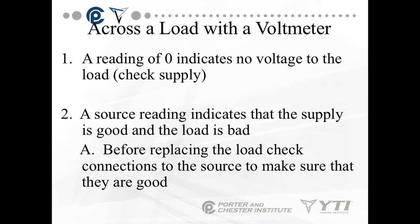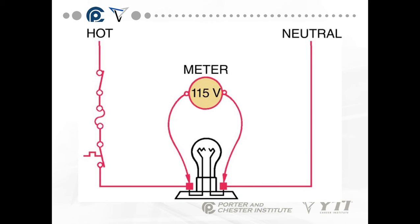Before replacing anything, always make sure to check the connections to the source and make sure the connections are good. If you read 115 volts across a light bulb and the light bulb isn't on, replace the light bulb. Same thing with a motor — if you read proper voltage across a motor and the motor isn't running, replace the motor. But always check and make sure the connections are good.